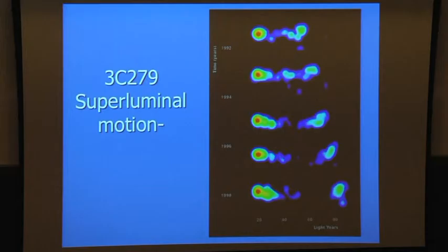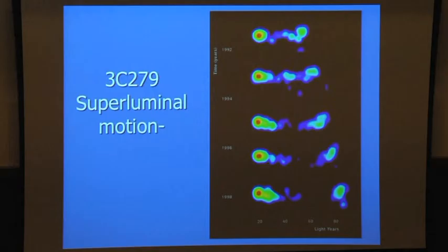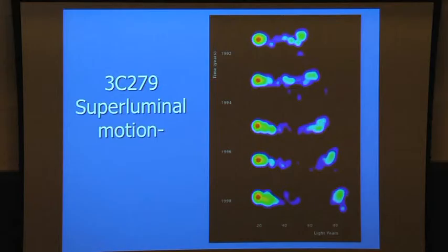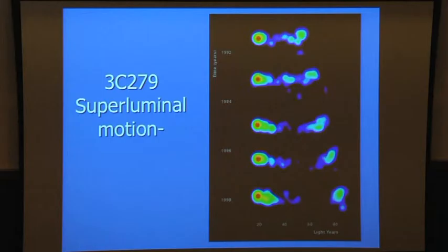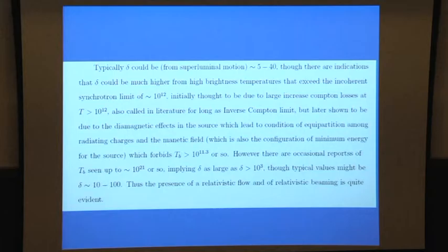So that is roughly a factor of 10, 10c is the velocity. So that superluminal motion, of course, many people have already talked, and we all know, that tells us that there is some relativistic motion, and perhaps relativistic beaming is there in all these sources. Of course, another evidence, this I'll just come back later.